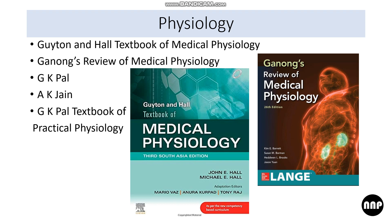For Physiology, there are gold-standard textbooks like Guyton & Hall and Ganong. In MBBS, you should read at least one of these once in first year, as they will help you in Pharmacology in second year and Medicine in final year. However, for university exam answers, some students find it difficult to write from Guyton, so you can use GK Paul or AK Jain for that purpose. For practical classes, GK Paul's Textbook of Practical Physiology is very good and recommended.